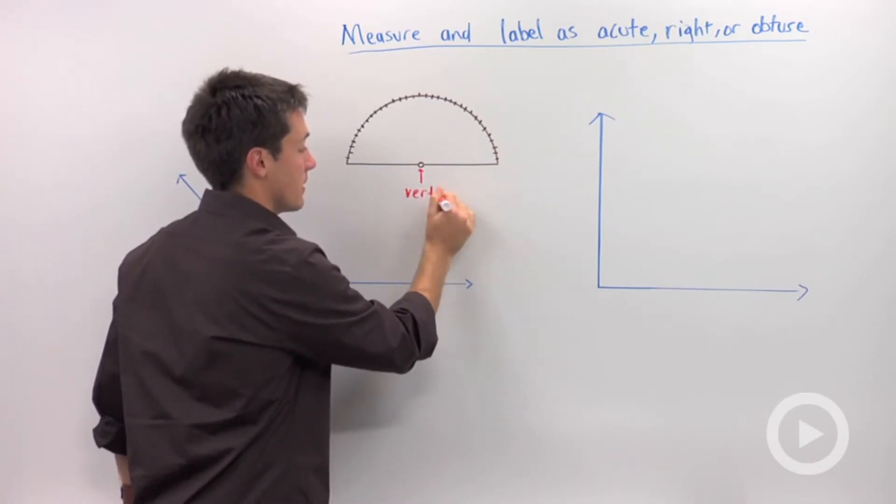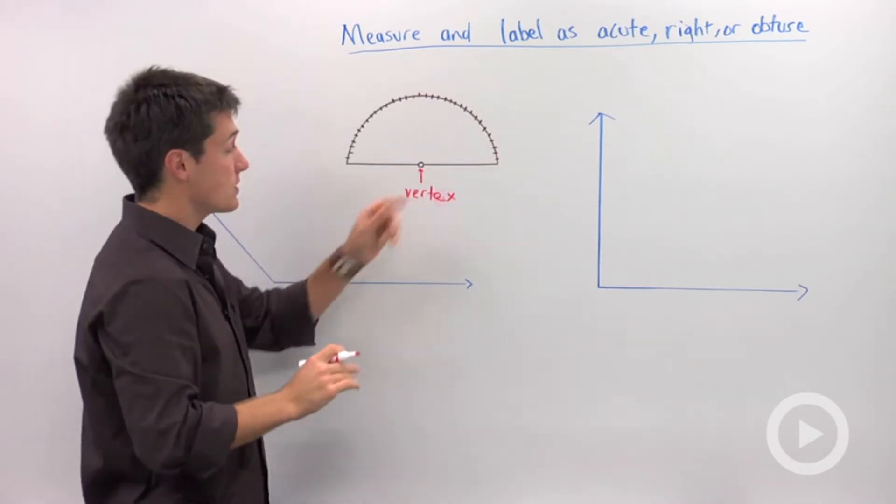That's where you want to put your vertex of your angle. Vertex is spelled with an E, not an A. So that is where the vertex is going to go.